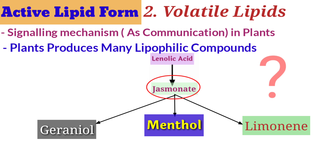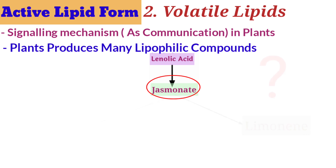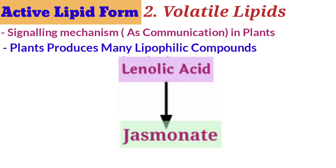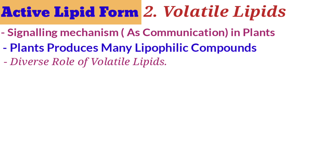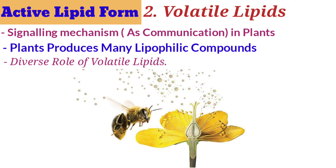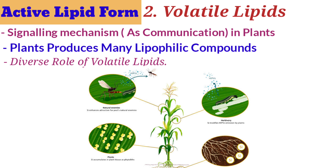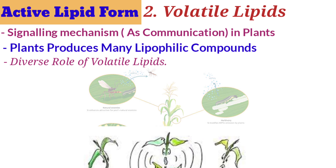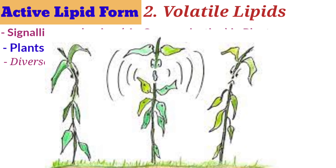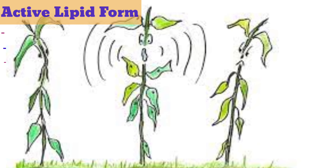Jasmonate is derived from the fatty acid linoleic acid. These volatile lipids have diverse roles: they act as attractants to pollinators in flowers, they repel herbivorous animals, they also attract animals for the plant's benefit, and they are used by plants for communication with each other in a field.